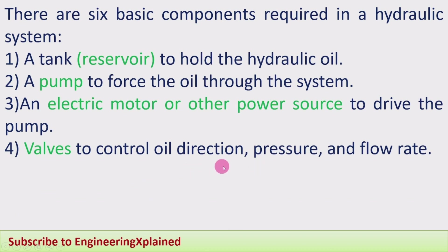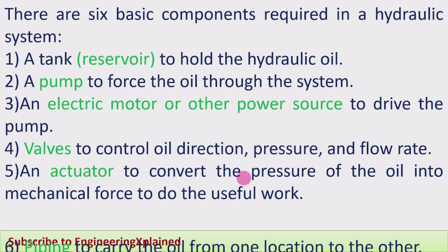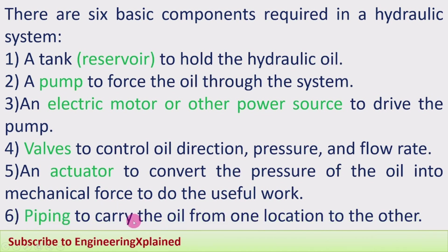Fourth, valves to control the oil direction, pressure, and flow rate. Fifth, an actuator that converts the pressure of the oil into mechanical force to do useful work — producing the output. Sixth, piping to carry the oil from one location to another, including all connected lines, which also come under the main components.